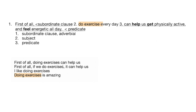We have 'help,' 'get,' and 'feel' as verbs. So let's label the parts: this part here is one, this is two, and this is three. One is the subordinate clause — the adverbial. Two is the subject and three is the predicate.